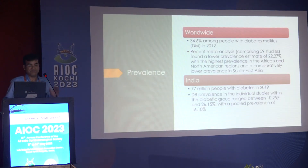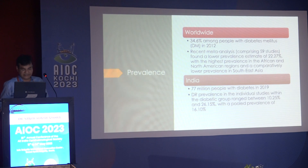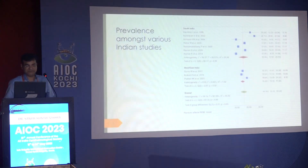Worldwide prevalence — we know that India has become the diabetic capital of the world. We have around 77 million people with diabetes as of 2019, and we have a prevalence of diabetic retinopathy from 10.25% to 26.15% based on various studies in India.